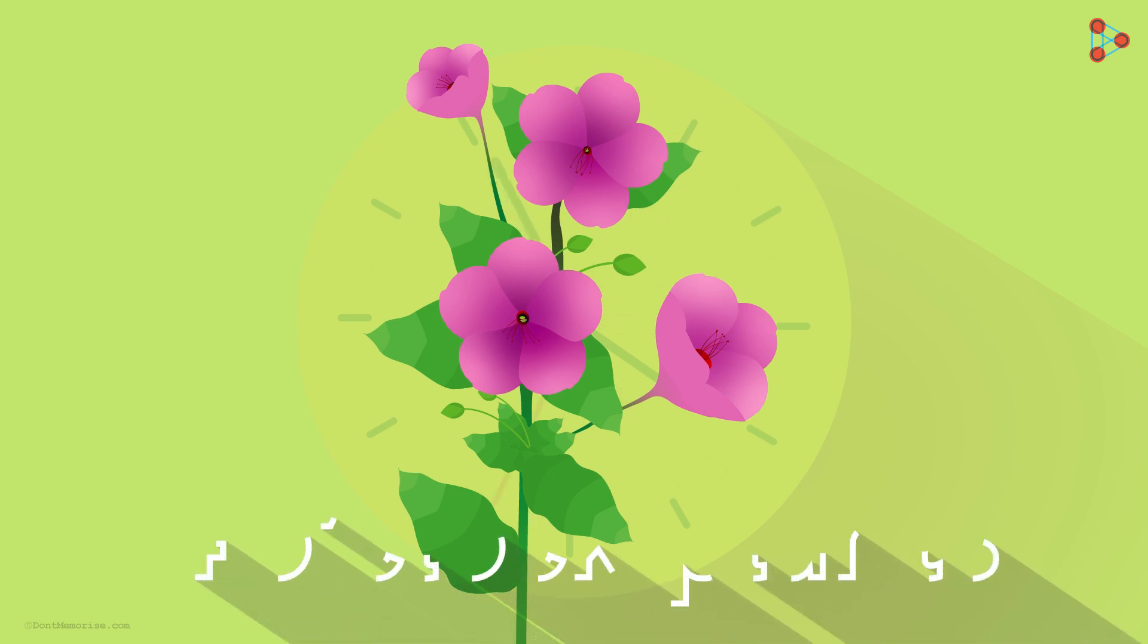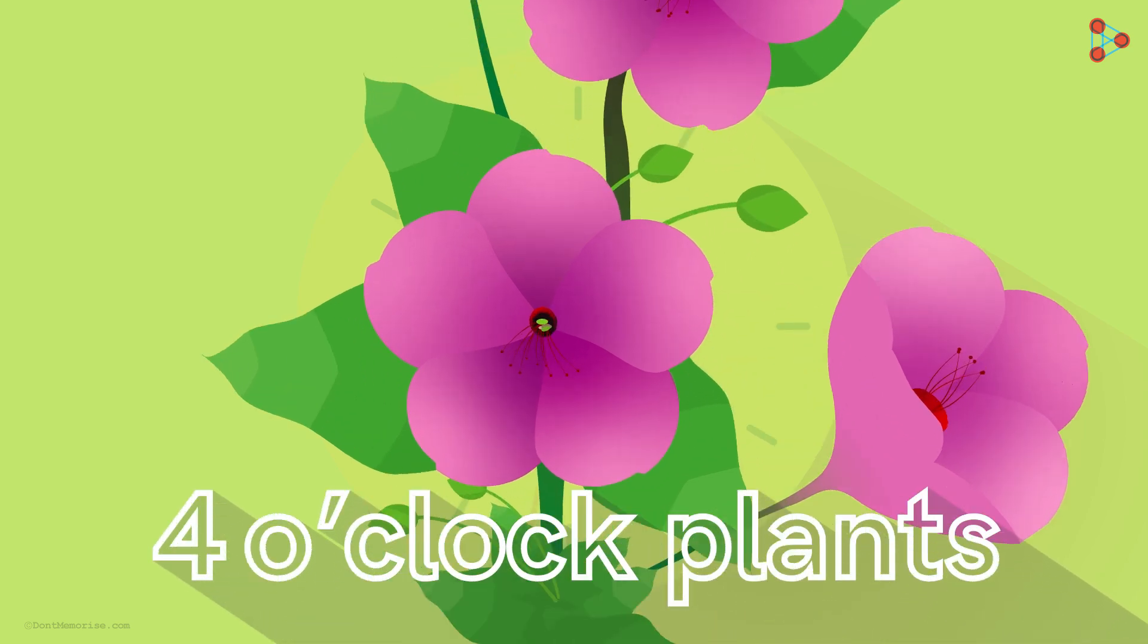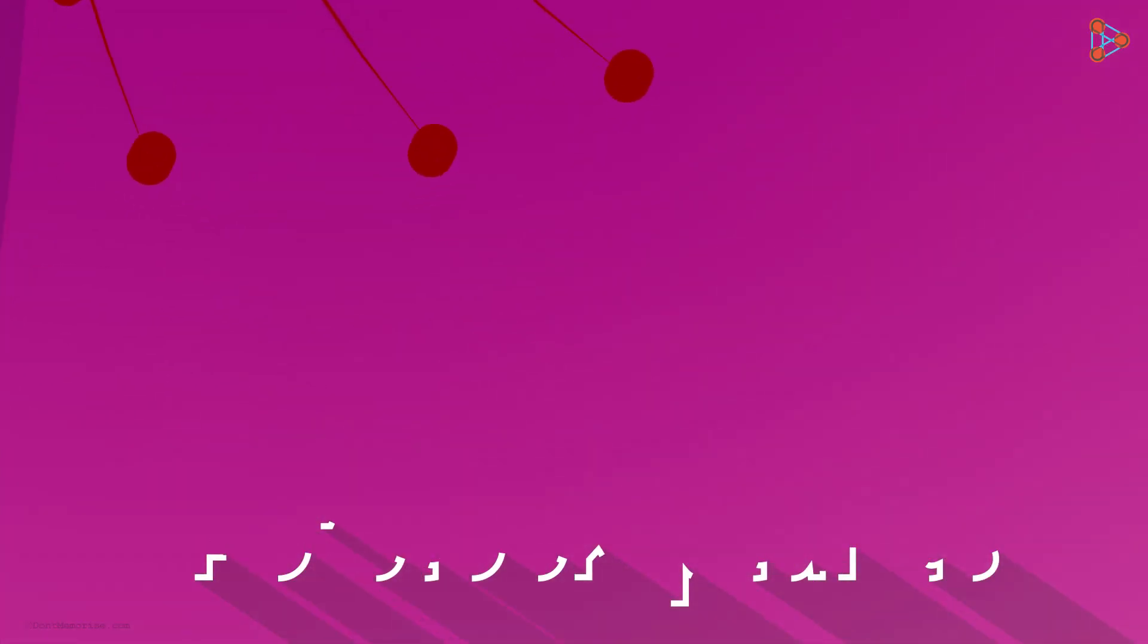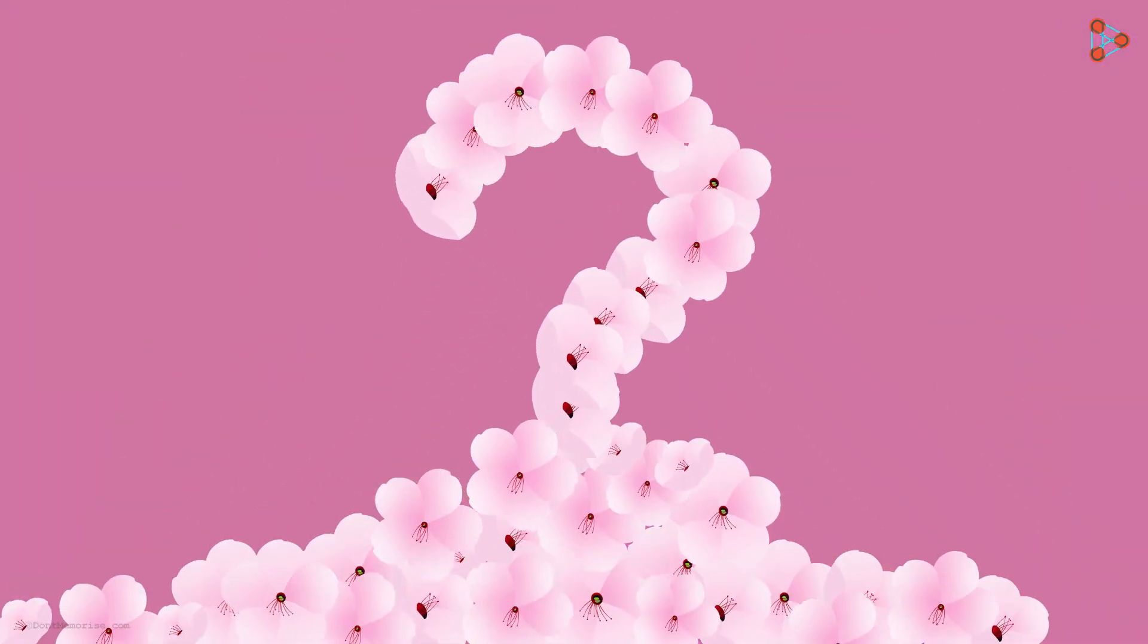What you see on the screen are called 4 o'clock plants, the plants that bloom with flowers usually in the evenings. We know that they are used for decorative purposes, but can you think of any other uses for them?